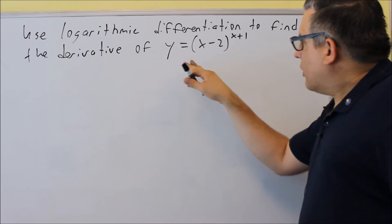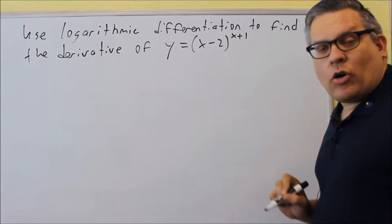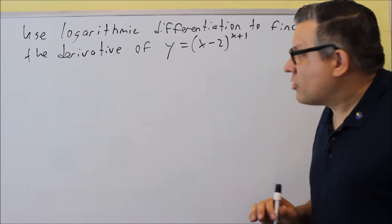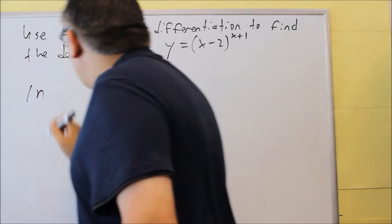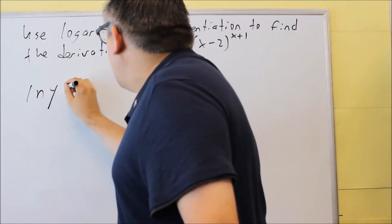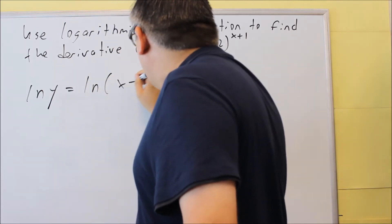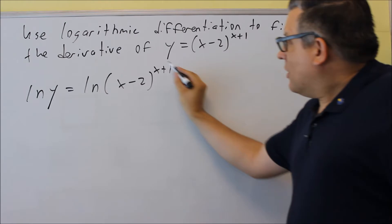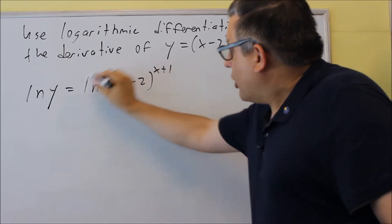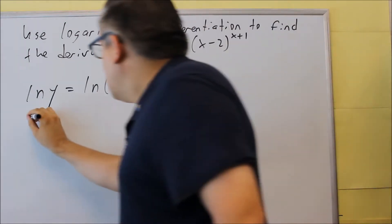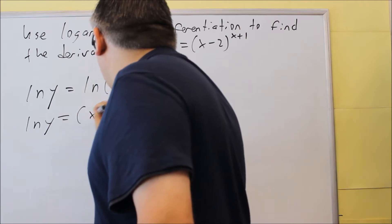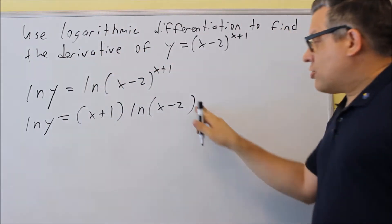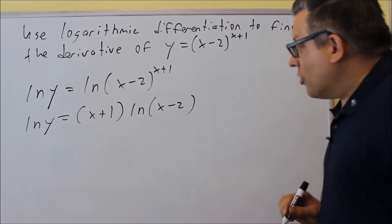We're going to begin by getting rid of this power. We can do that by applying a log or natural log on both sides. Taking the natural log of both sides allows us to bring the power down in front. So natural log Y equals X plus 1 in front, and we have natural log of X minus 2 left over.